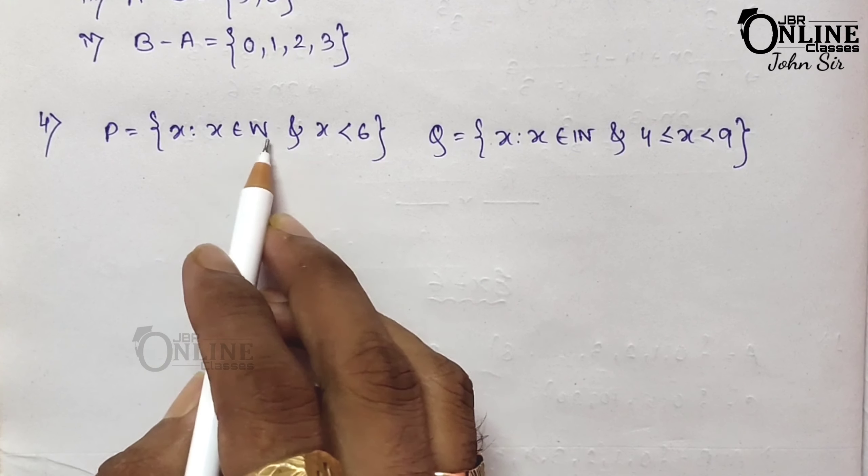Next, (A intersection B) complement means Xi minus (A intersection B). So subtracting {4, 6, 8} from Xi gives {1, 2, 3, 5, 7, 9}. A complement union B complement: combining {5, 9} and {1, 2, 3, 5, 7, 9} gives {1, 2, 3, 5, 7, 9}. Both results are equal, verifying De Morgan's law — it's proved.